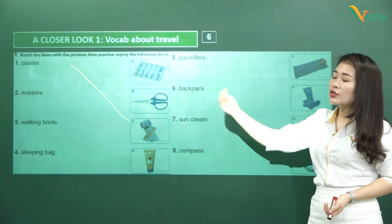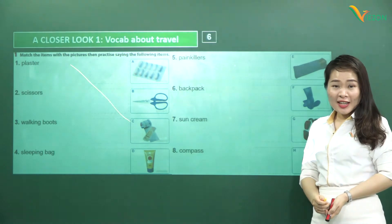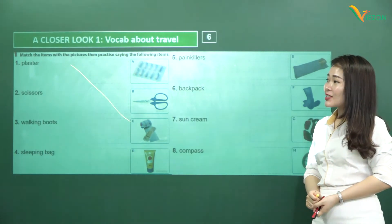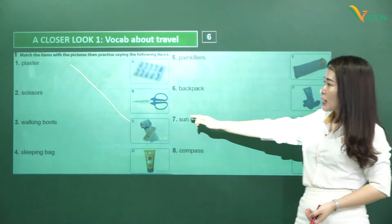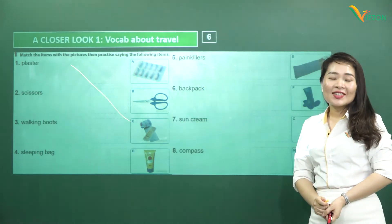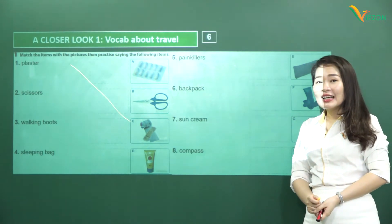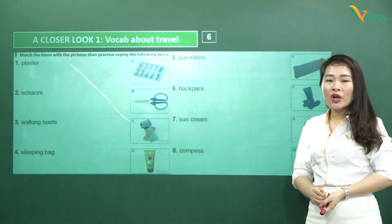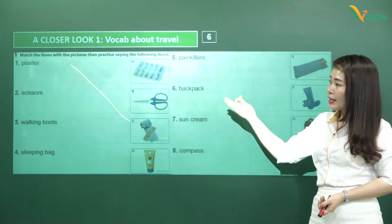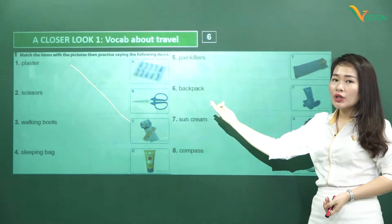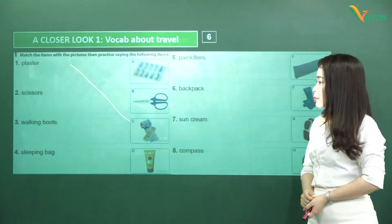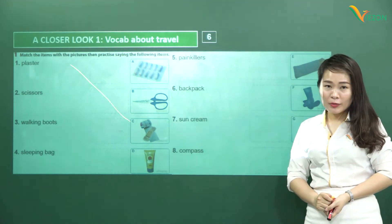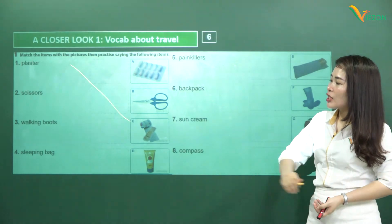Next, 'scissors' — note the 's' at the end since it's a plural noun: 'scissors', meaning a pair of scissors, so the answer is B. However, note that even though scissors are commonly used, you cannot bring them on an airplane. Next, 'walking boots' — remember there's an 's' at the end too: 'walking boots'. These are boots for hiking, so the answer is F.